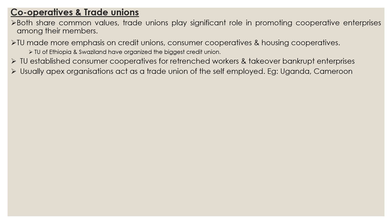Apex organizations usually act as trade unions of self-employed cooperatives. We have learned about vertical integration structure and where the apex organization is situated in that flowchart. The cooperative unions in Uganda and Cameroon are some examples of apex organizations acting as trade unions.